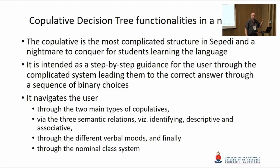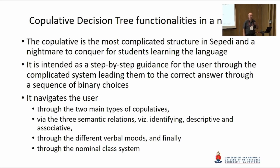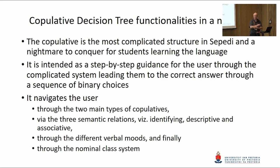A couple of decision tree functionalities in a nutshell. According to the grammarians of Zepedi, the copulative is the most complex construction in the language — in a typical grammar book, I think 34 pages have been devoted to it. The average first-year student and very often the native speaker also doesn't know exactly how these things work. The intention of the copulative decision tree is to help one through binary choices to select the correct form. It navigates the user through two main types of copulatives, via three semantic relations — identifying, descriptive, and associative — through different verbal moods, and finally through the nominal class system.